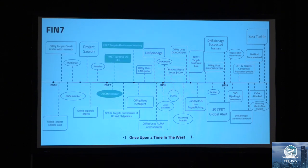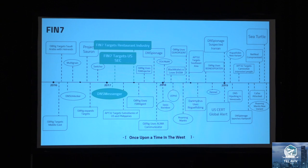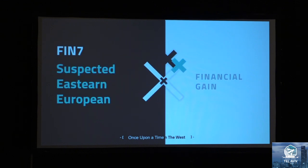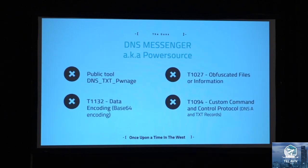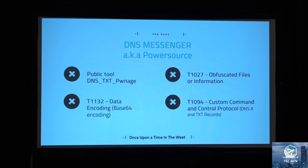Now we look at FIN7, a financially motivated threat actor suspected to be Eastern European, probably Russian. The main reason behind their attacks is economic advantage. What is interesting about their tool is that it's based on a public tool available on GitHub called DNS TXT Pwnage — they use an obfuscated version of it. It is the only tool we have seen that switches between A records and TXT records to disguise tunneling communication. It also randomizes the domain to which it makes requests, adding a kind of salting.